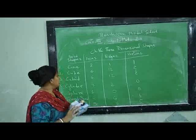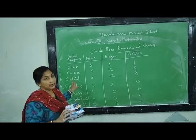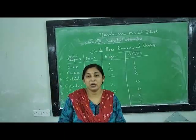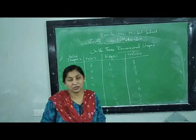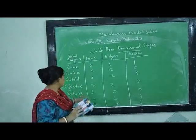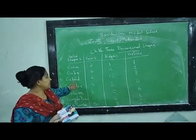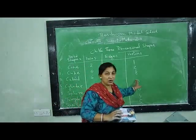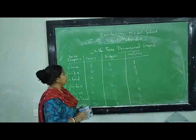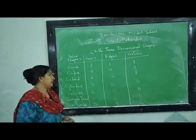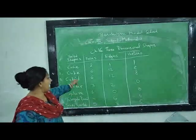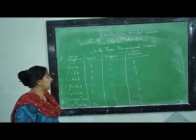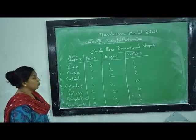Similarly for a cuboid — it is based on a rectangular shape. It has also the same as a cube: six faces, twelve edges, and eight vertices.